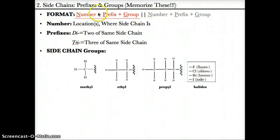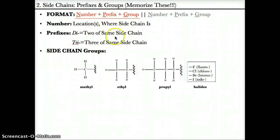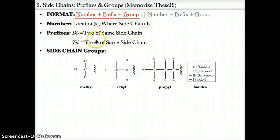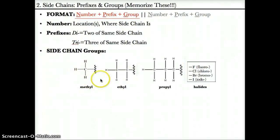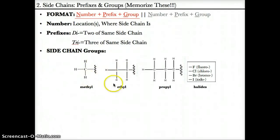Let's discuss side chains in terms of prefixes and groups — please memorize this slide. The format for the side chain is number plus prefix plus group, which goes first in the name. The number shows the locations of the side chains. The two possible prefixes are di for two of the same side chain, and tri for three of the same side chain. The possible side chain groups include methyl (CH3), which is one carbon bonded to three H's, followed by one carbon bonded to two H's attached to the main chain.